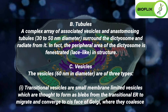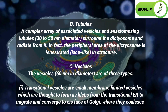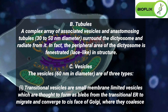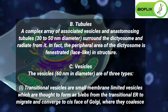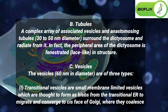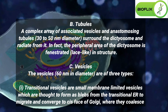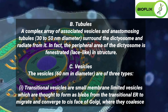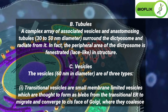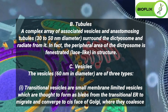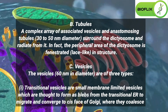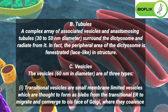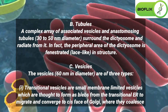Vesicles. The vesicles, 60 nanometers in diameter, are of three types. Transitional vesicles are small membrane-limited vesicles which are thought to form as blebs from the transitional ER, migrate and converge to the cis-face of Golgi, where they coalesce to form new cisternae.